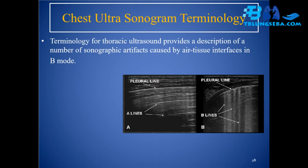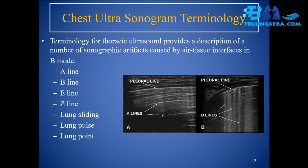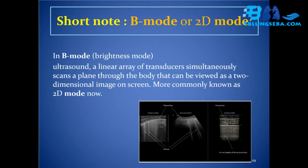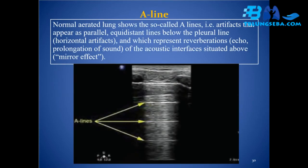Chest ultrasonogram terminology: terminology for thoracic ultrasound provides a description of a number of sonographic artifacts caused by air-tissue interfaces in B-mode: A-line, B-line, E-line, Z-line, lung sliding, lung pulse, lung point. In B-mode (brightness mode / 2D mode), a linear array of transducers simultaneously scans a plane through the body, viewed as a two-dimensional image on screen.